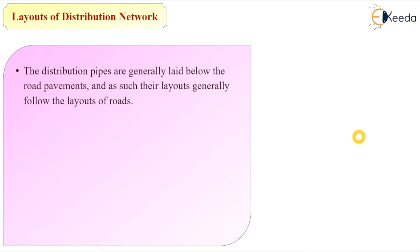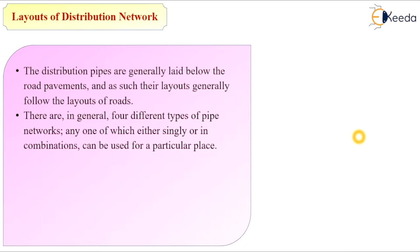In the layout of distribution networks, there are different types depending on the construction of roads or the planning of that particular city area. The distribution pipes are generally laid below the road pavement and as such their layout generally follows the layout of roads. Depending on road direction or road construction, we decide the layout of the distribution network. In general, there are four different types of pipe network, any one of which, either singly or in combination, can be used for a particular place.